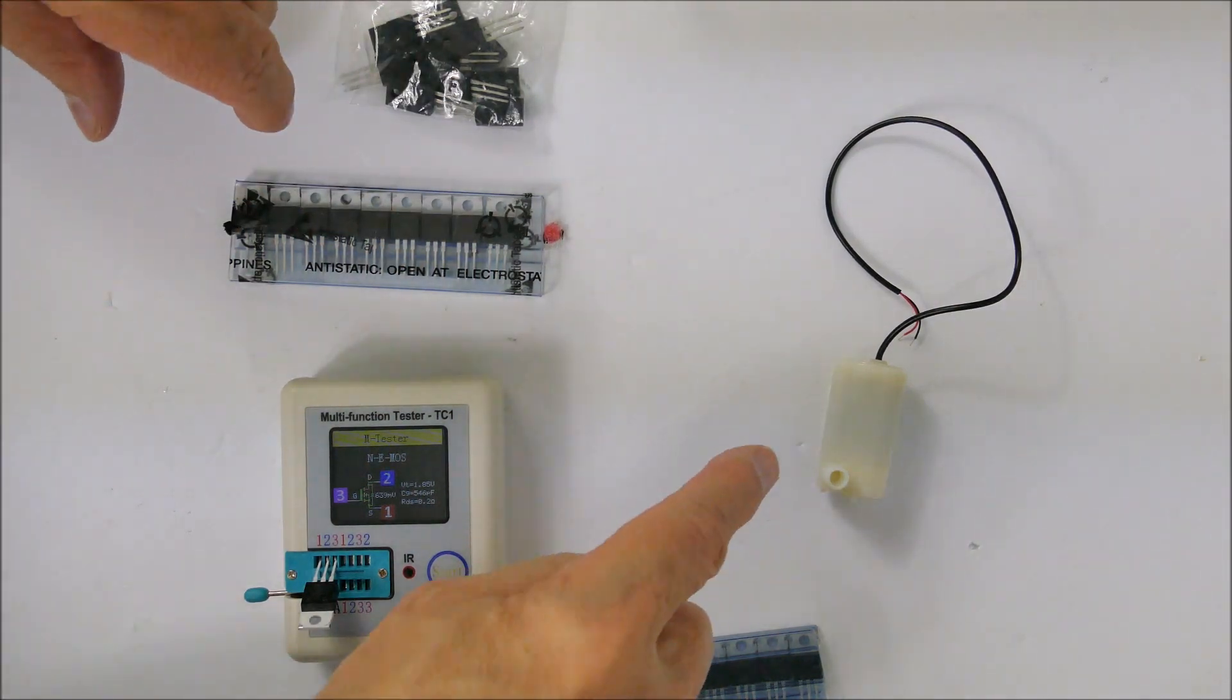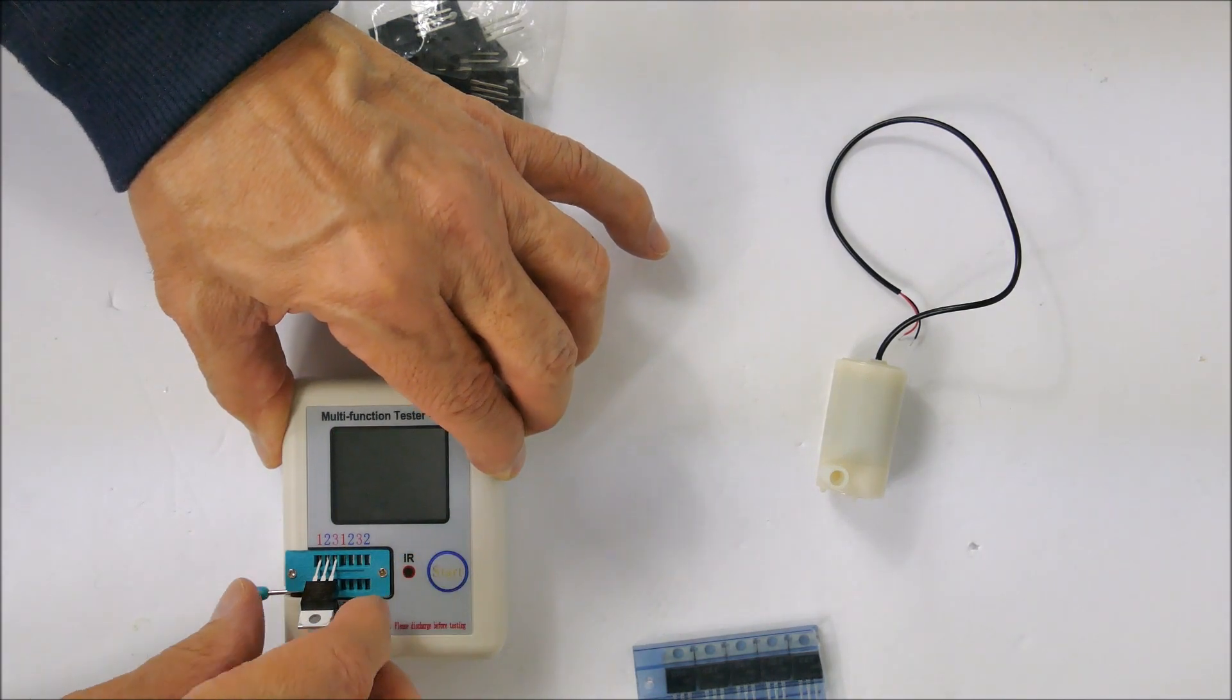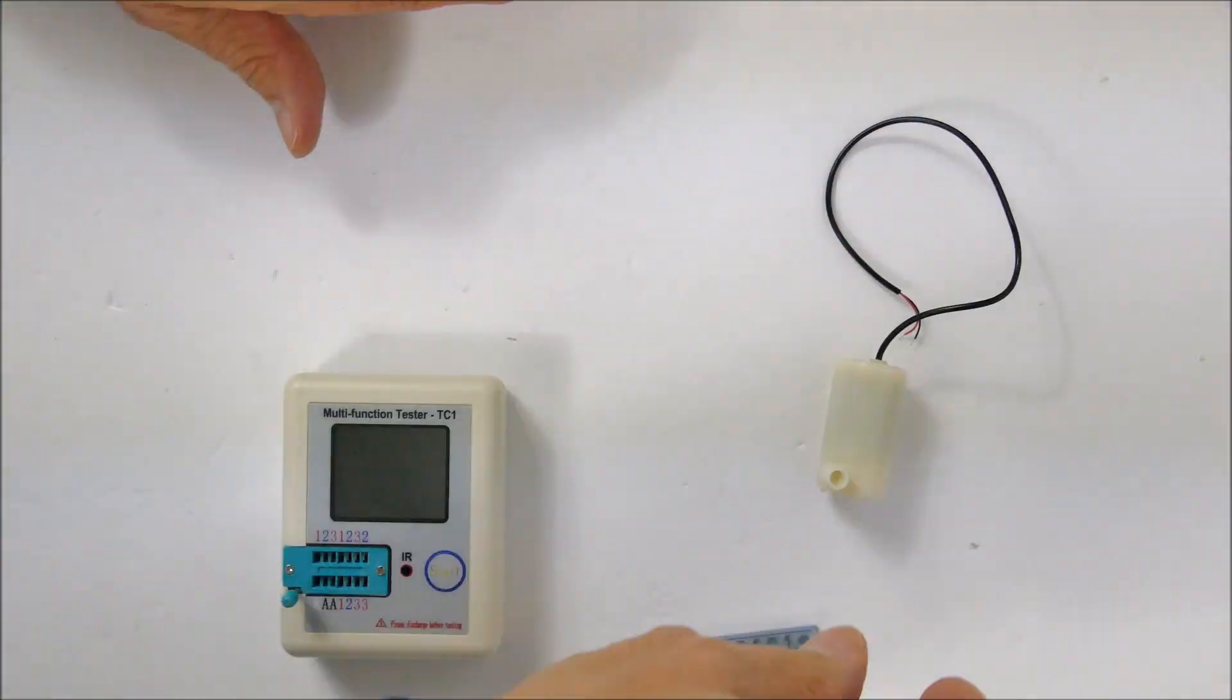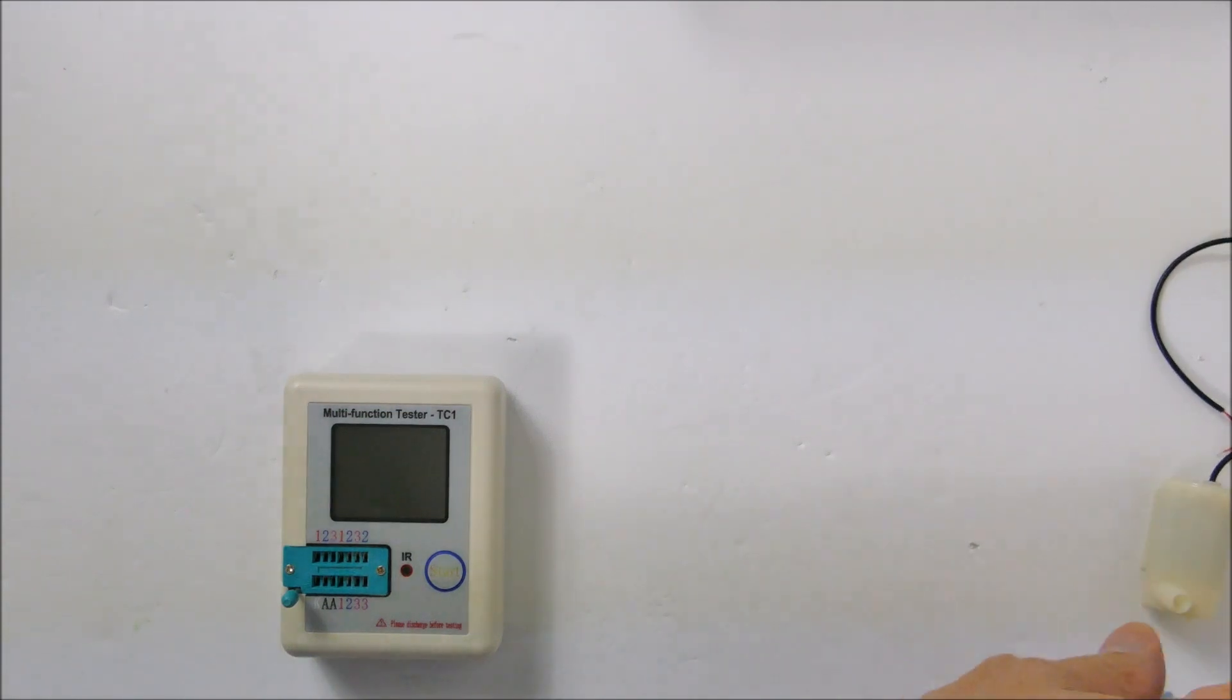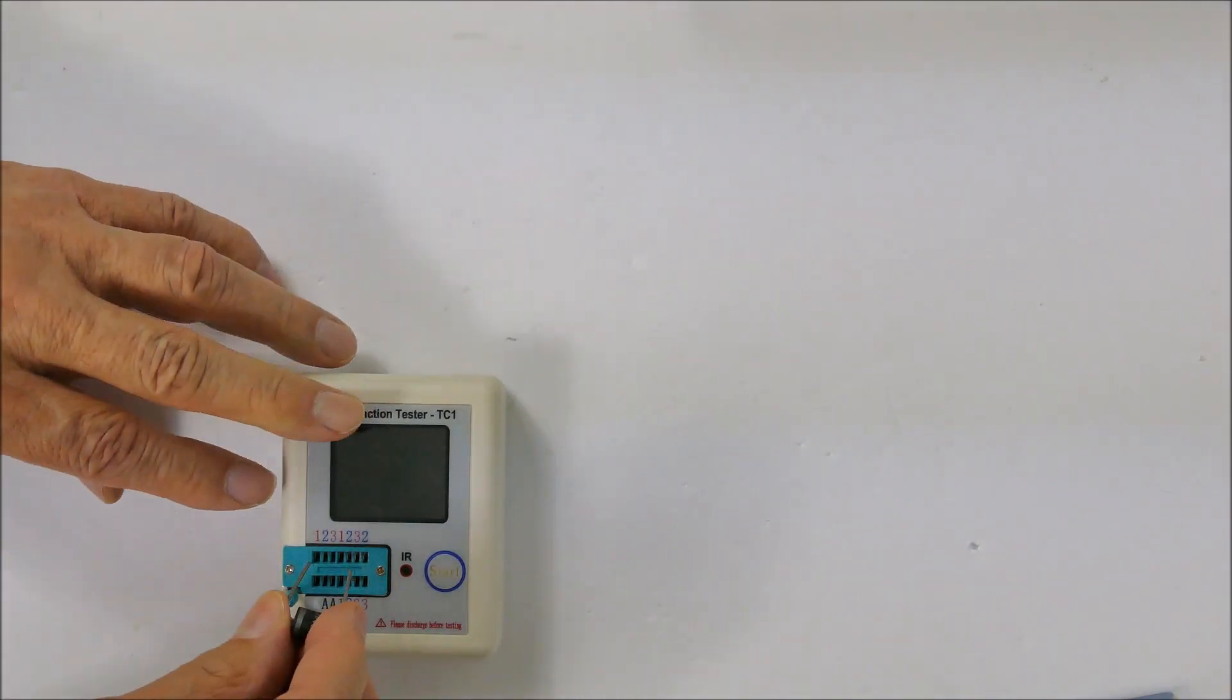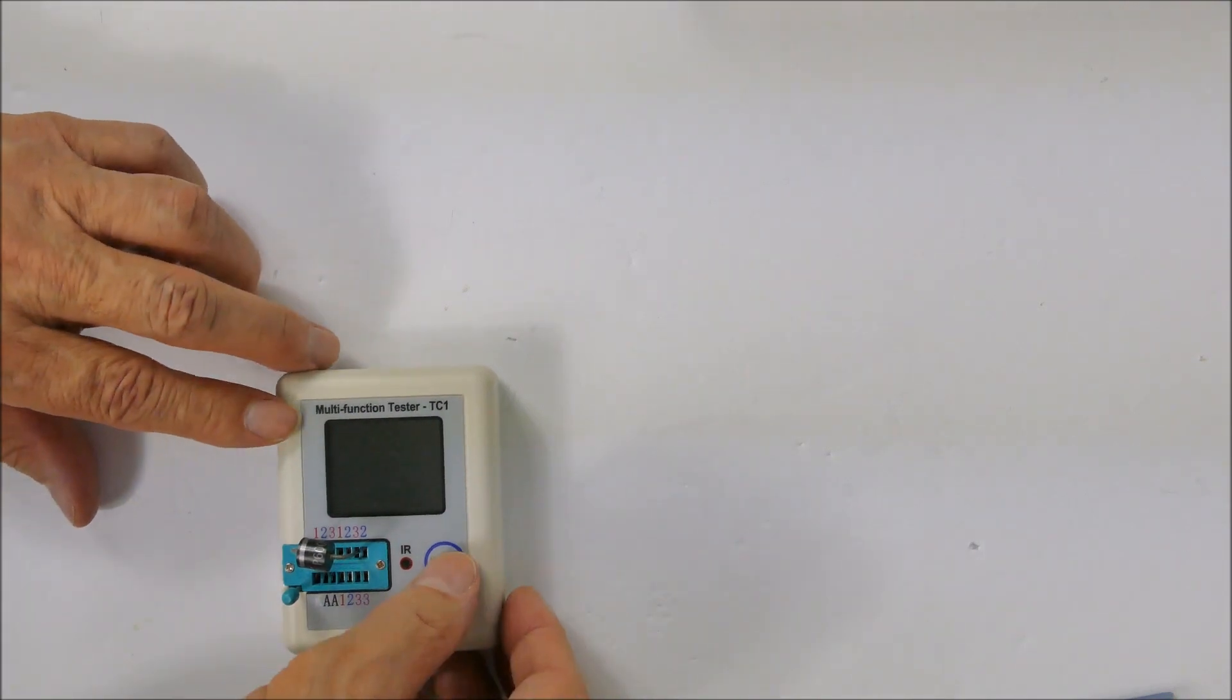But this little multi-tester can test just about anything. It doesn't need to be a transistor. Here's a pretty hefty looking diode. I stick this in here between any two pins, so I'm going to try one and three. It shows you a diagram of what it discovered - pin one is the anode, which is the cathode, and it gives you the forward voltage, in this case 544 millivolts.